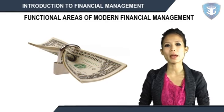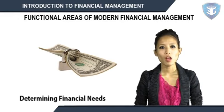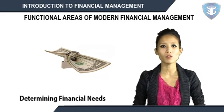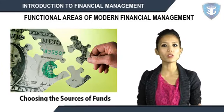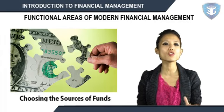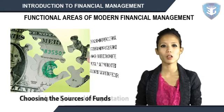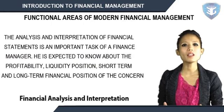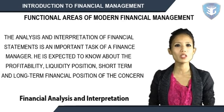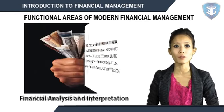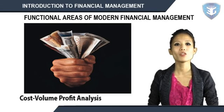Some of the functional areas covered in financial management: determining financial needs — a finance manager should determine the financial needs of the enterprise; choosing the sources of funds — a number of sources may be available, such as issuing share capital and debentures; financial institutions may be requested to provide long-term funds; financial analysis and interpretation — the finance manager is expected to know about the profitability, liquidity position, and short-term and long-term financial position of the concern.